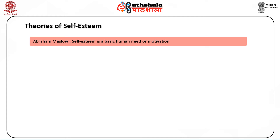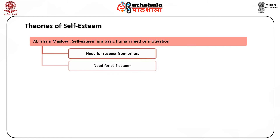Maslow described two different forms of self-esteem: the need for respect from others and the need for self-esteem itself. Respect from others includes recognition, acceptance, status and appreciation, and was believed to be more fragile and easily lost than inner self-esteem. He further argued that without the fulfillment of the self-esteem need, individuals will be driven to seek it and unable to grow and obtain self-actualization — the highest of all needs.